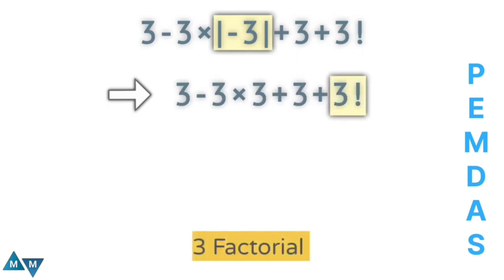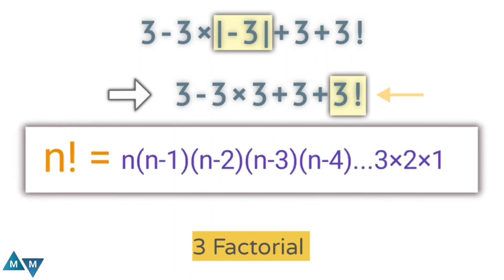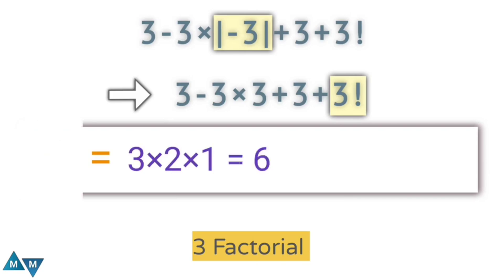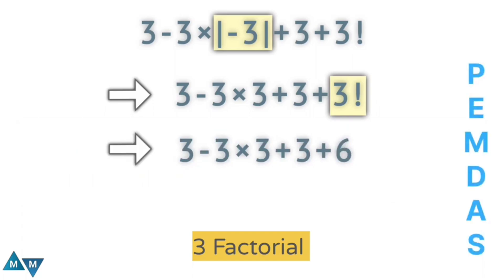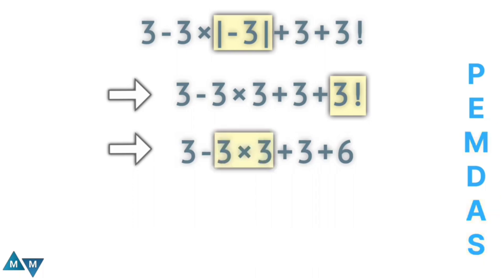Now we have three factorial. When a number has this exclamation mark, we call it a factorial — you multiply it by each predecessor down to one. So three factorial equals three times two times one, which gives six. The expression becomes three minus three times three, plus three, plus six. Since multiplication has higher priority, three times three will be our first move, which equals nine.